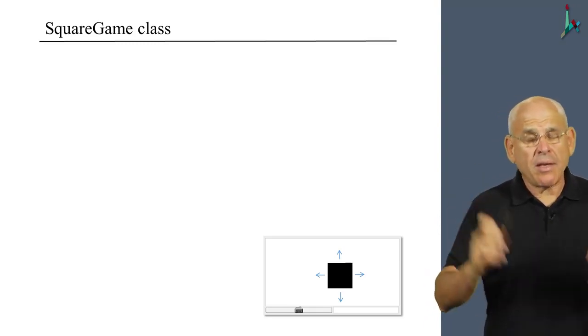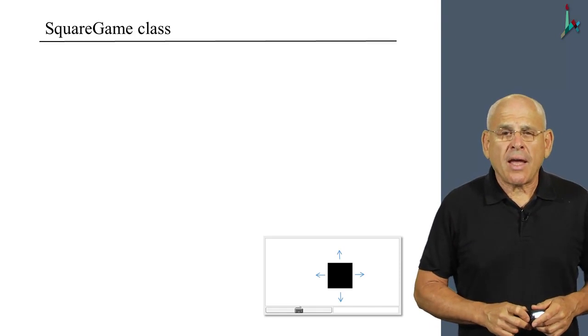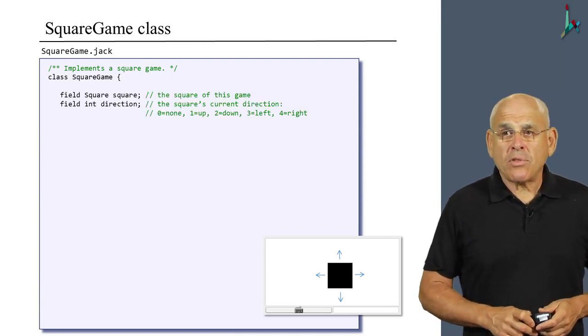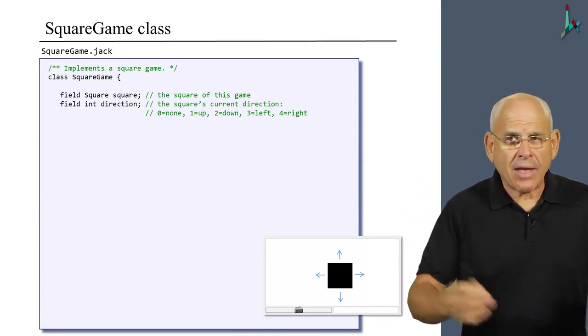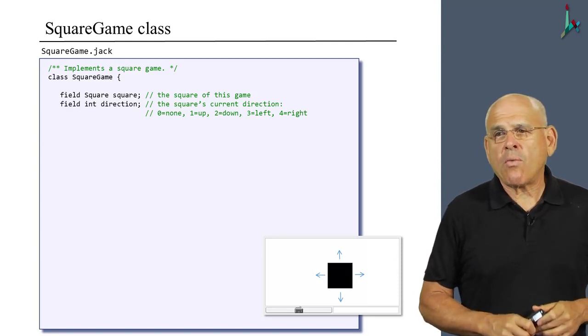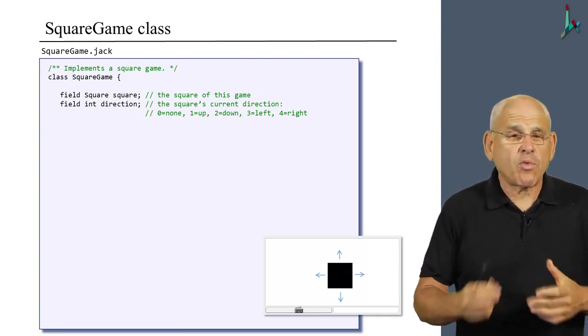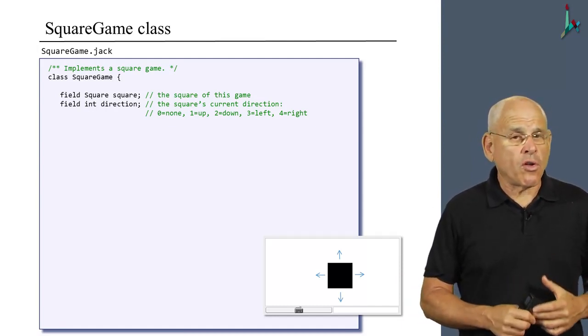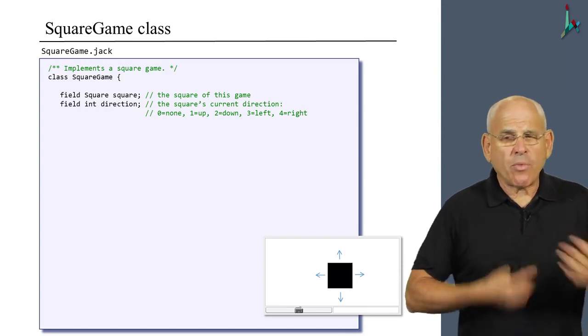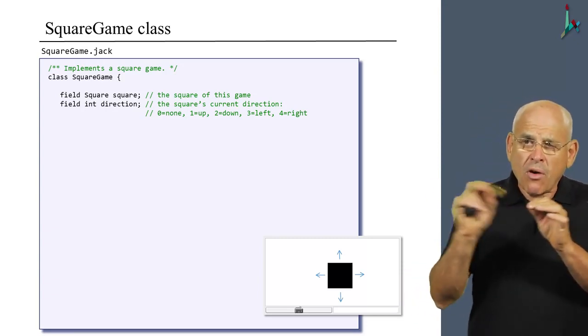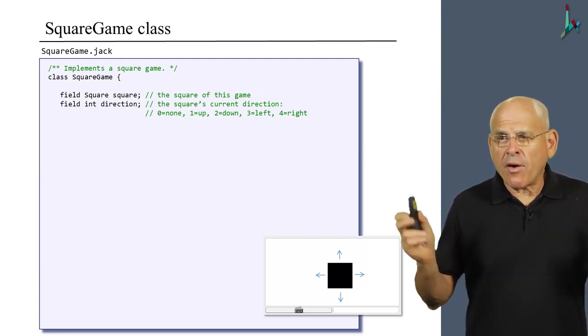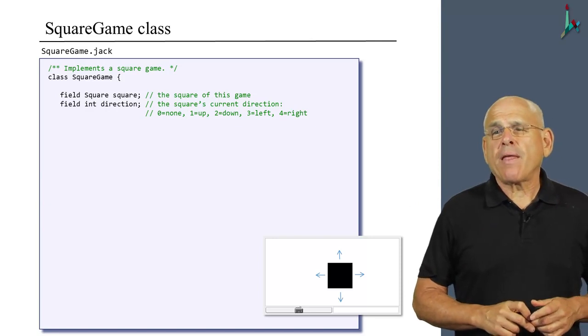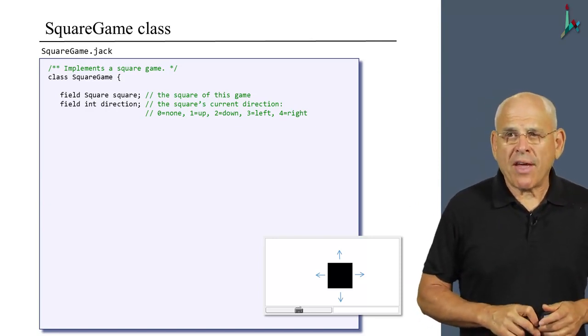This has been the Square class in all its glory. Now we move on to talk about the SquareGame class that actually controls the game. To begin with, every SquareGame class needs to have a square. So one property of the SquareGame class is a square, which is an object of type Square. Then the square also has a direction, which is something controlled by the user. Because this direction is something we use in many places in the code, we decided to use some constants to code the five possible directions, starting with zero, which means that the square is stationary.